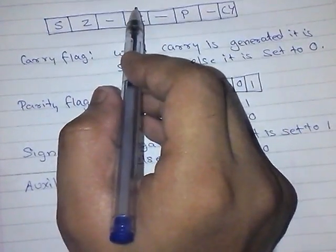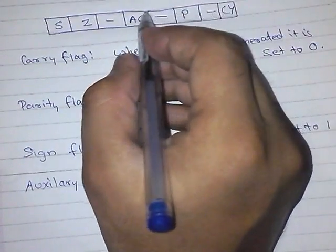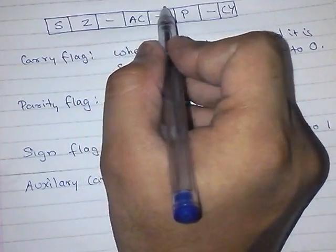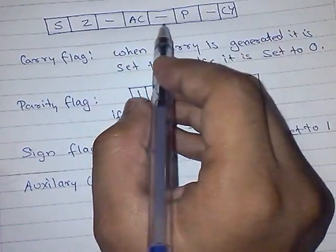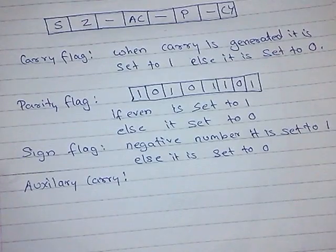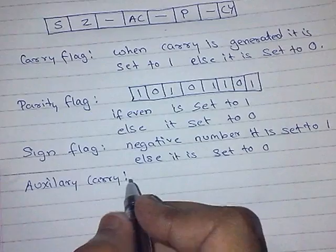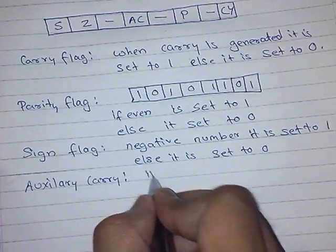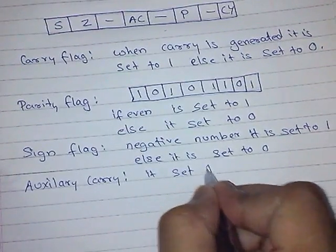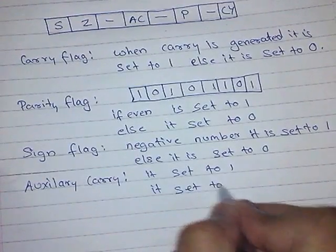Take it as a subtraction. We have to take a number from here, or when we do an addition, the number from here goes to here. In those case, we call it as auxiliary carry is generated. When auxiliary carry is generated, it is set to 1, or else it is set to 0.